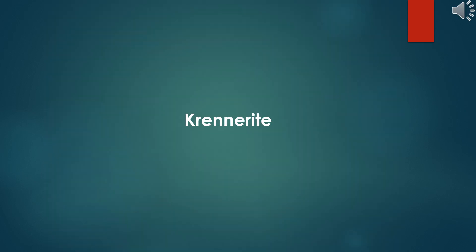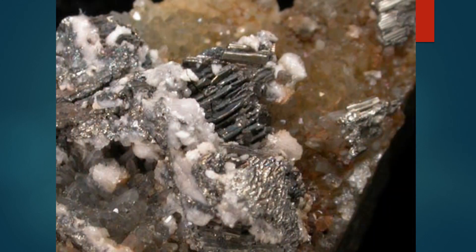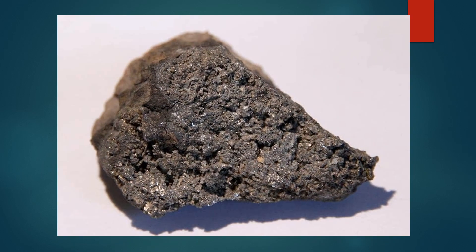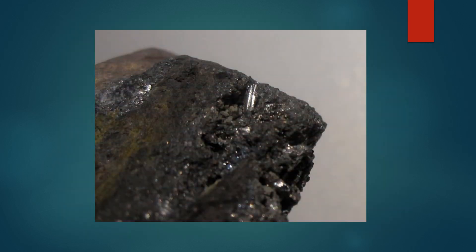Krennerite is a rare type of gold ore in the telluride mineral group with the chemical formula AuTe₂. Similar to calaverite, krennerite also contains gold bonded with tellurium but with a different crystal structure, which distinguishes it from calaverite.